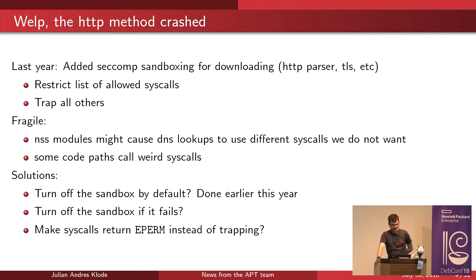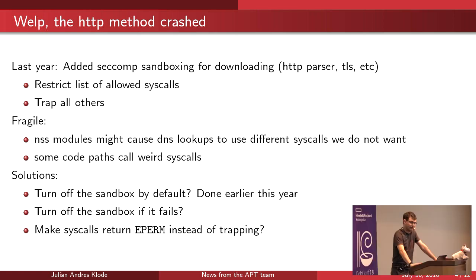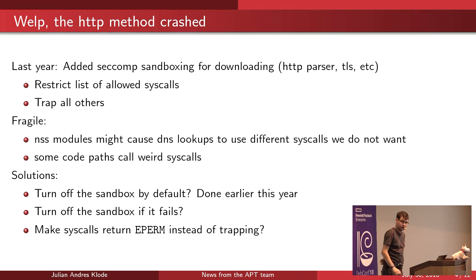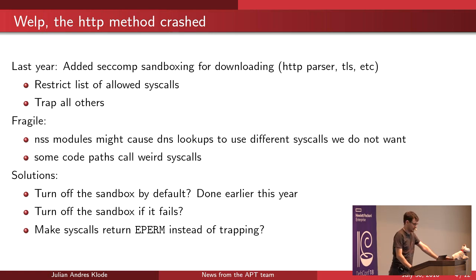The fix we're likely going to implement is to make the syscalls return a permission error instead of trapping, which means that if the syscall fails, it allows the program to work around it and ignore the error. Like if it can't access its files, it can just use defaults or something like that, which should make the whole sandboxing a bit more stable.